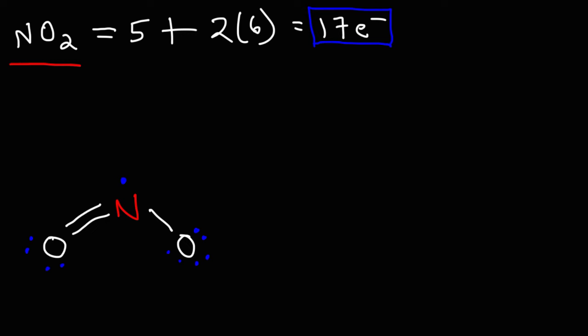So notice that we have a total of seventeen valence electrons. Two, four, six, eight, ten, twelve, fourteen, sixteen, seventeen. So this is the Lewis structure of NO2, nitrogen dioxide.